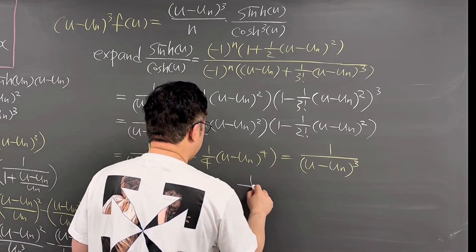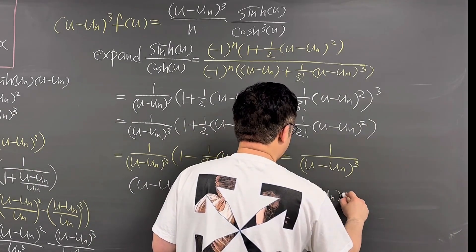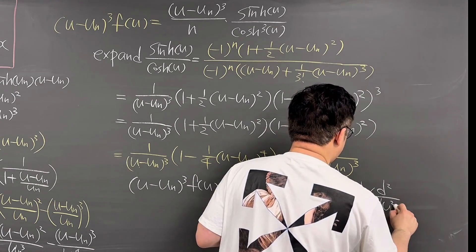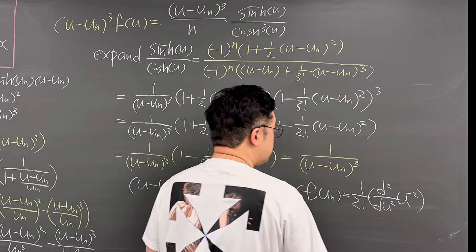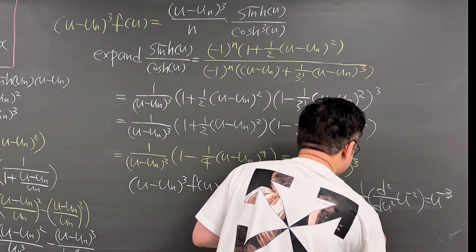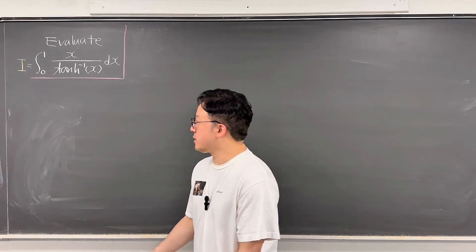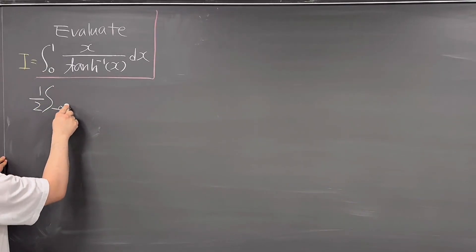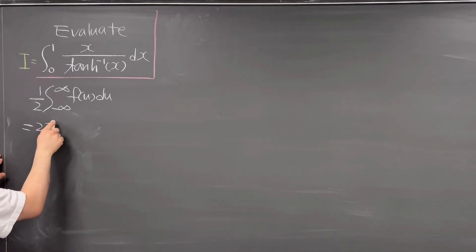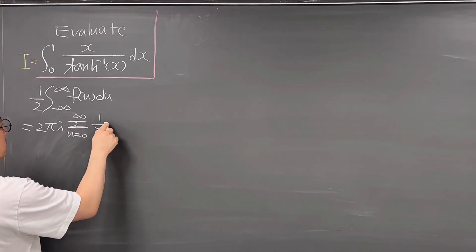So the residue of f at u_n is (1/2!) times the second derivative of u^(−1), which gives u^(−3), evaluated at u = u_n. So the residue is simply 1/u_n³. Now let's talk about the integral: 1/2 times the integral from −∞ to ∞ of f(u) du equals 2πi times the summation from n = 0 to infinity of (1/2) · (1/u_n³).